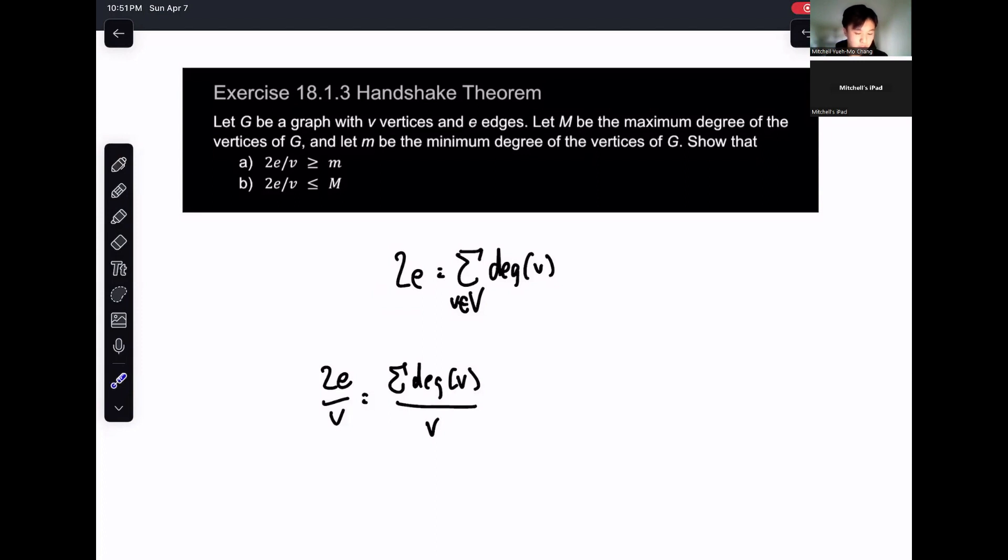So we can represent this as the average number of degrees per vertex. We know that it has to be greater than or equal to m, since m is the minimum degree of the vertices of G.